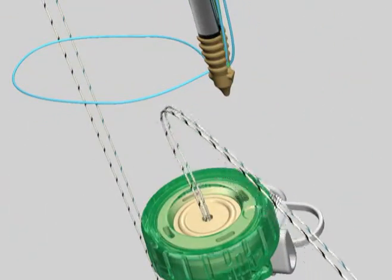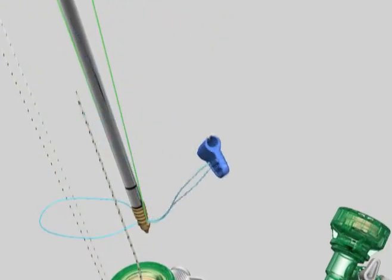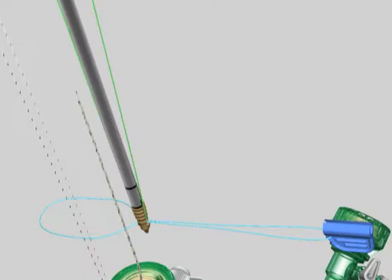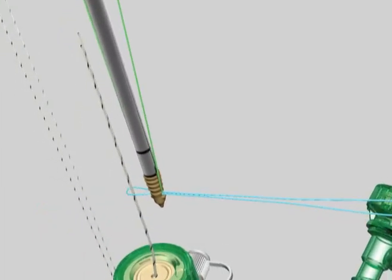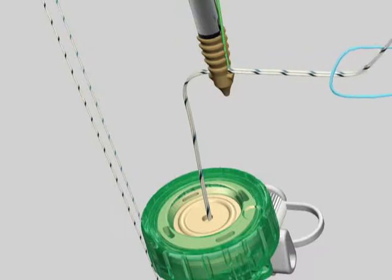Feed the two medial suture limbs through the suture threader loop. Remove the suture threader tab from the inserter shaft and pull it away to thread the two medial limbs through the hole in the footprint anchor tip. Discard the suture threader.